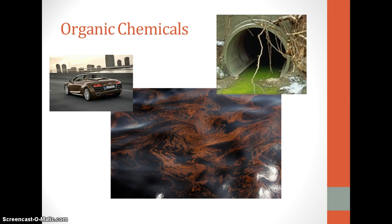Organic chemicals originate from industry, restaurants, cars, households, and farms, and include a long list of possible chemicals such as gasoline, oil, engine coolant, solvents, detergents, pesticides such as insecticides, herbicides, and fungicides, and polychlorinated biphenyls, or PCBs.